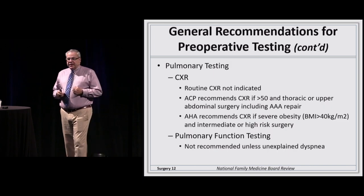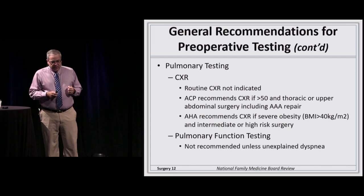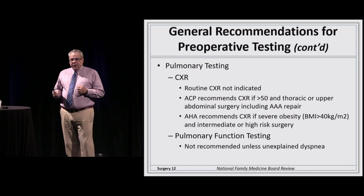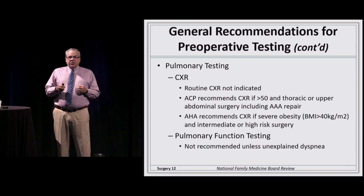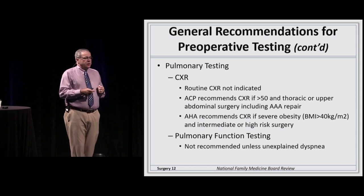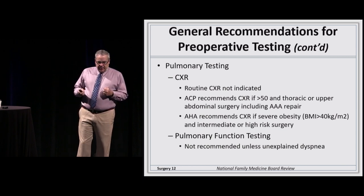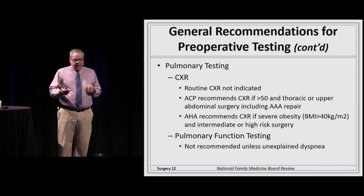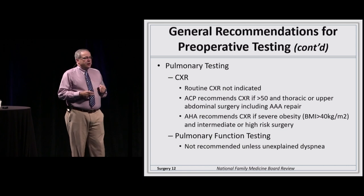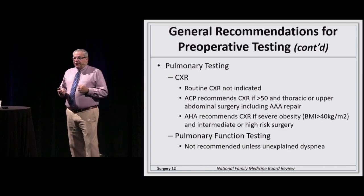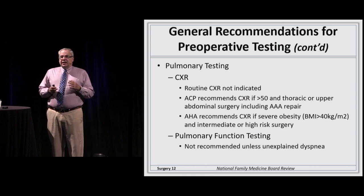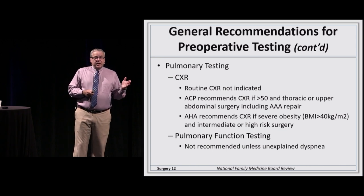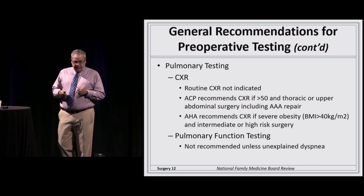What about pulmonary testing? We no longer routinely recommend chest x-rays. The American College of Physicians recommends a chest x-ray for patients over age 50 undergoing thoracic or upper abdominal surgery including aneurysm repair. The American Heart Association recommends a chest x-ray for morbidly obese patients undergoing intermediate or high-risk surgical procedures. Pulmonary function testing is not associated with a decrease in post-operative pulmonary complications, so we don't generally recommend it.